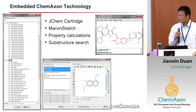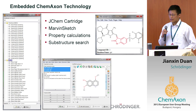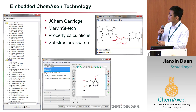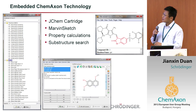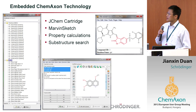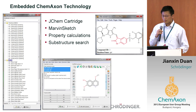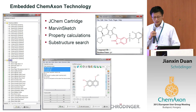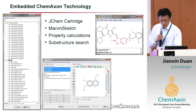ChemAxon technology is integrated. We have JChem Cartridge, Marvin Sketch, property calculations, and substructure search — all from ChemAxon in Syrah.